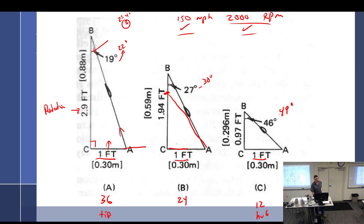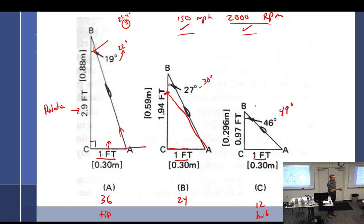Unfortunately with a fixed pitch propeller you can't twist it in flight. During takeoff — high RPM and low forward velocity — the angles are all messed up. Then you get to a sweet spot where it works well, but then you start climbing and the parameters shift again.